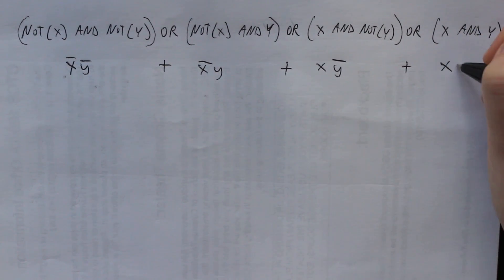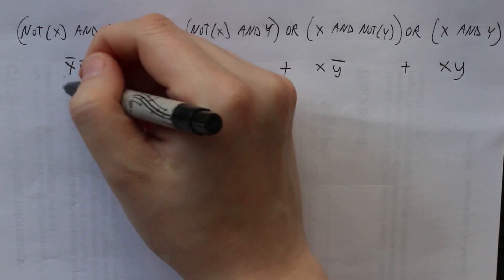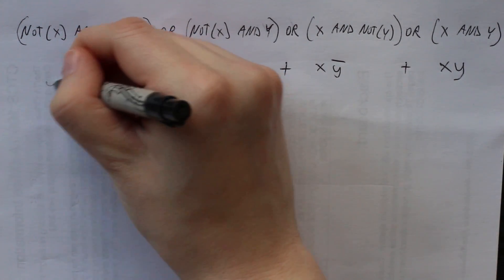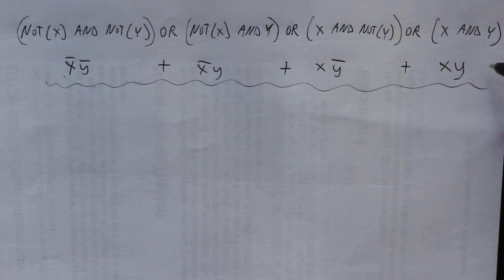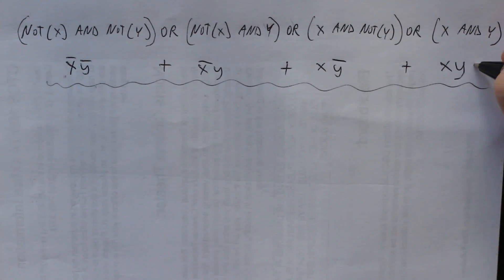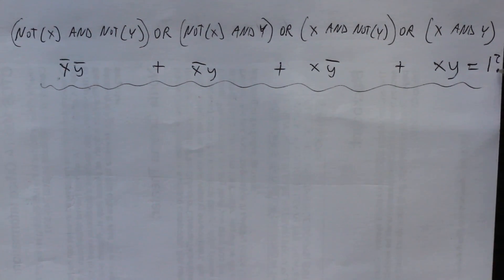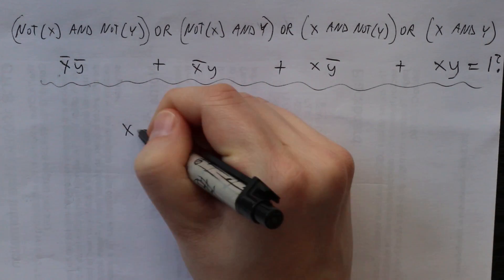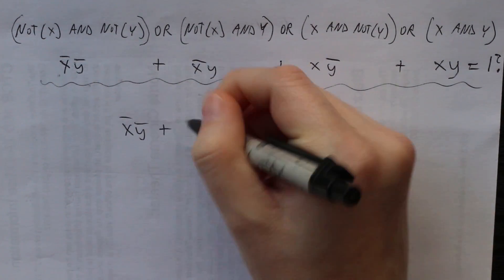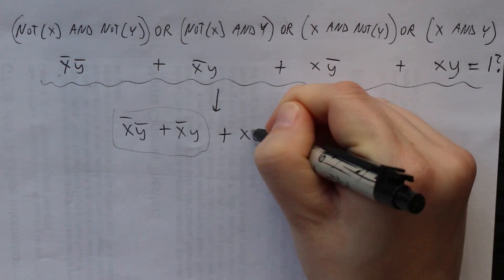If I understand boolean algebra as well as I think I do, I should be able to prove that this long expression is just equal to one. I should be able to write it as just one, because a function that outputs one regardless of the inputs is basically not really a function — it's just the number one. So let's see what I remember here.